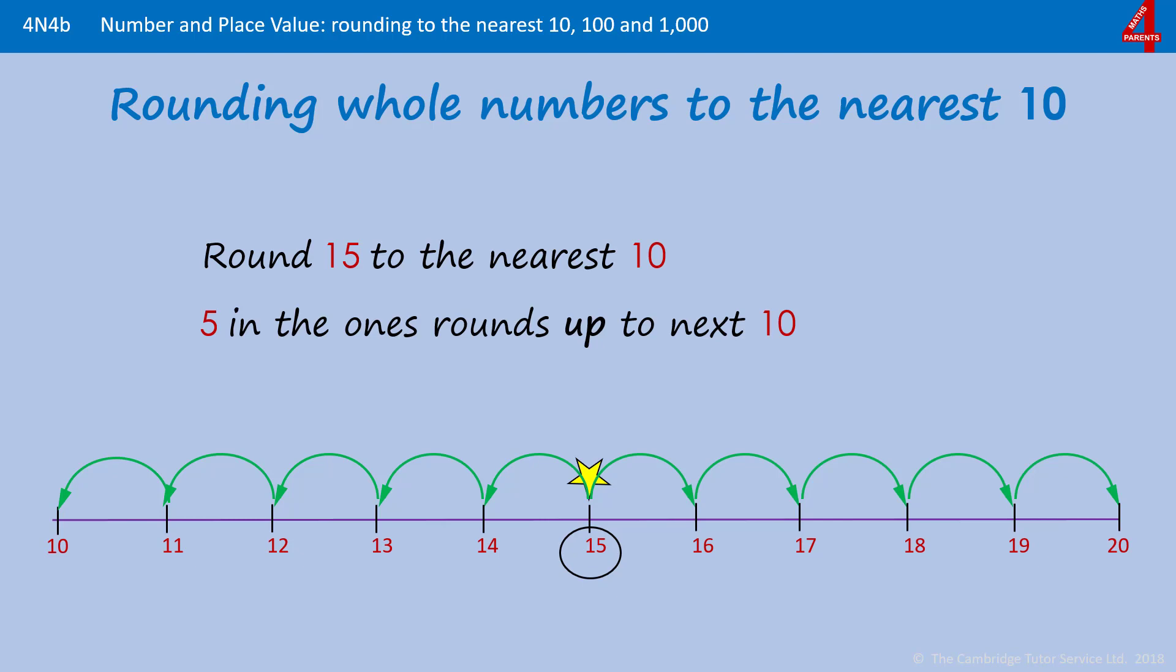So 15 rounded to the nearest 10, even though it's the same distance away from 10 and 20, the rule is that we round it up to 20.